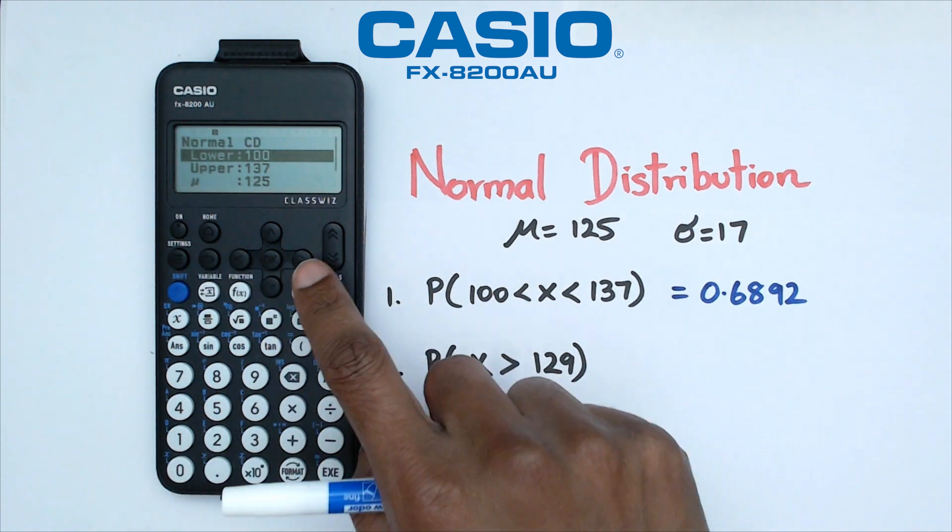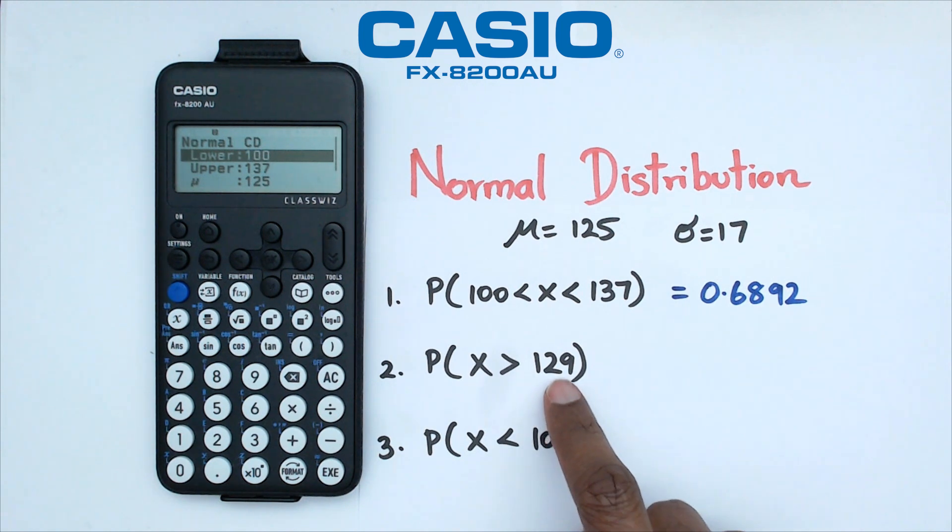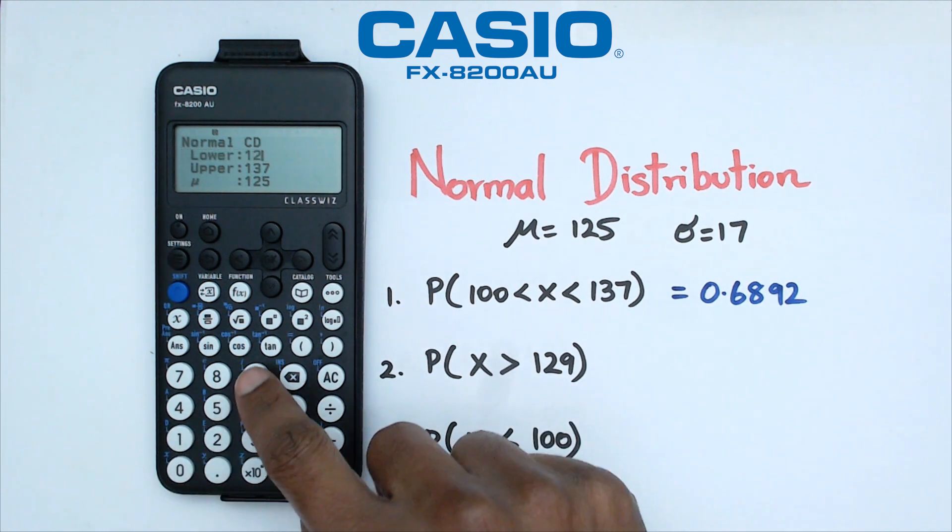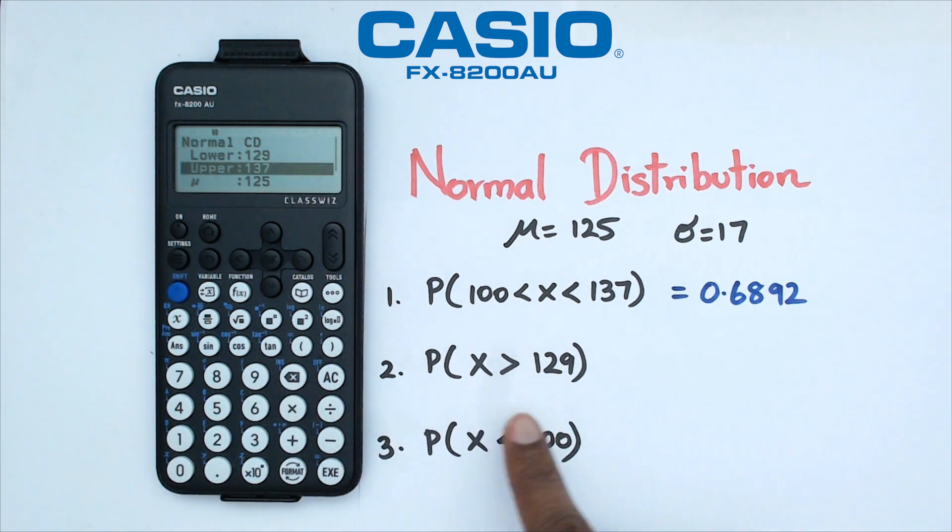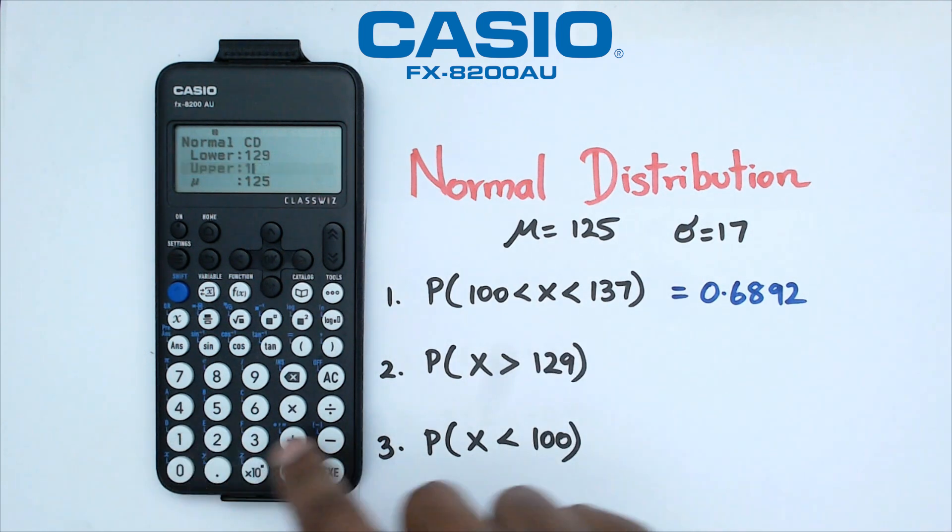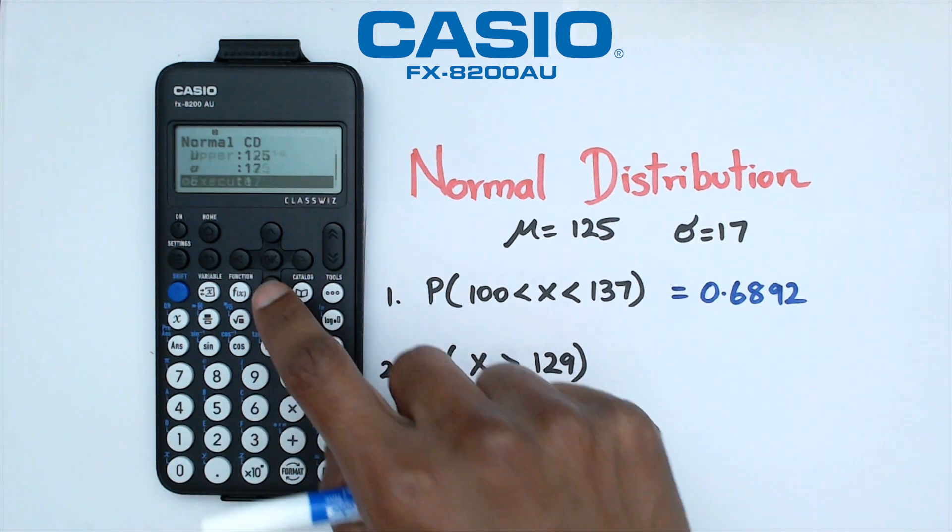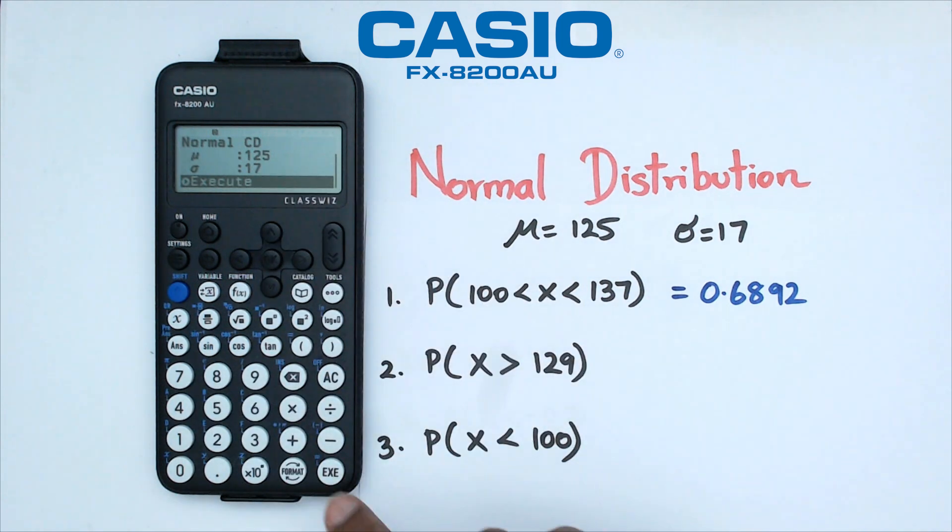So that means our lower limit is going to be 129, and for the upper one, well, because we don't really know how far this is going to go, a quick little tip you can do is 1 times 10 to the power of 10. Then we're just going to go down to Execute because our mean and standard deviation are still the same, and we get an answer of 0.407.